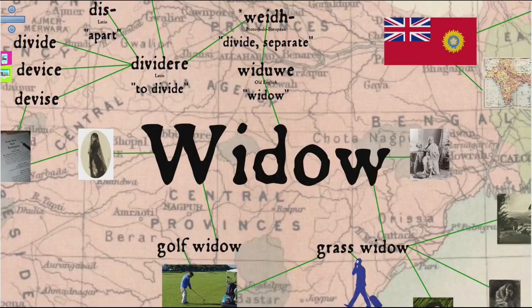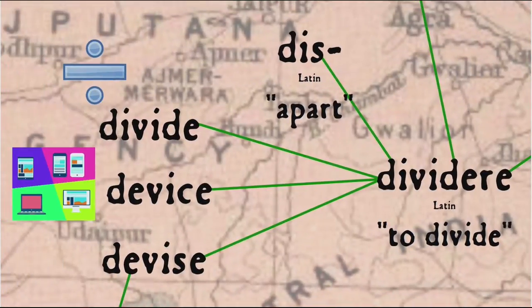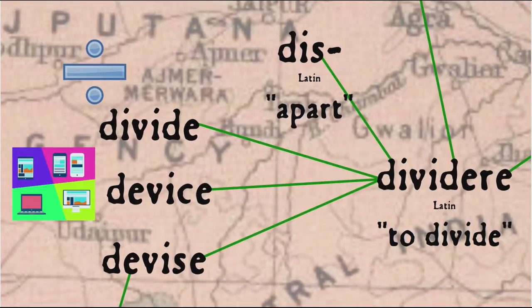The word widow comes ultimately from a Proto-Indo-European root that means to divide or separate, the notion being that a widow is a woman who is divided from her husband by death. We get widow through the Germanic branch of languages, from Old English 'wudua,' but that Proto-Indo-European root also gives us the words divide, devise, and device, from the Latin verb 'dividere,' literally 'to divide apart.' The word divide will become important again a little later.